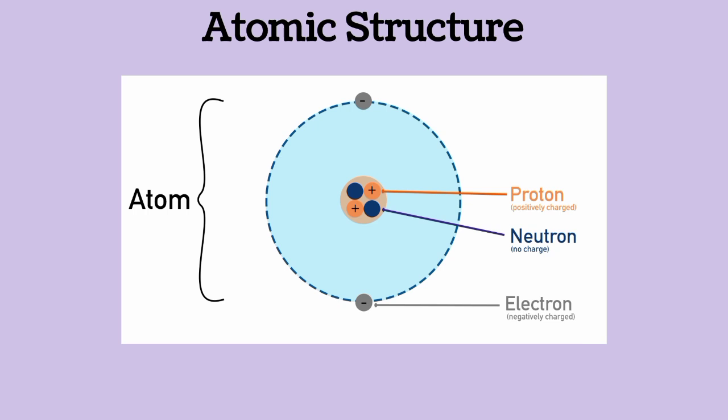Atomic structure is a phenomenon that tries to describe the structure of the atom. The atom is made up of two major parts: the shell and the nucleus. On the shell of the atom there is an electron, which is a negatively charged particle, and the nucleus comprises protons and neutrons.